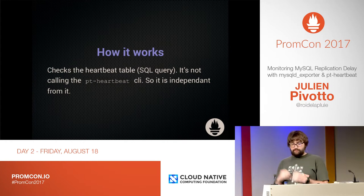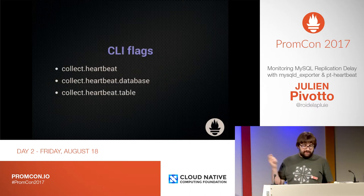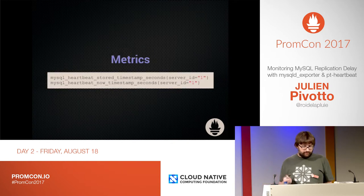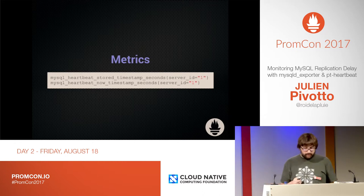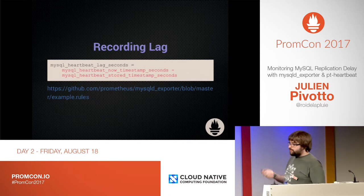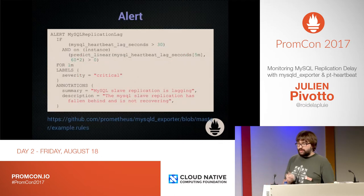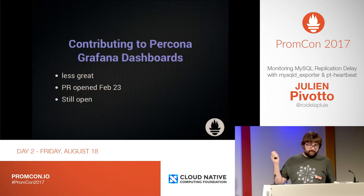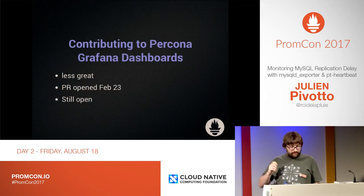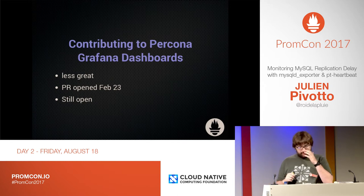How it works on the Prometheus side is that we run an extra query to check that timestamp. We don't depend on PTR bit directly — PTR bit is like the reference implementation, but you can use anything else if you want. We have three command line flags and two metrics: the timestamp that the MySQL server has now, and the timestamp that is in the heartbeat table. You can calculate that lag by doing now minus the stored timestamp, and then you can alert on it — for example, if in two minutes the lag is not zero, then alert me.